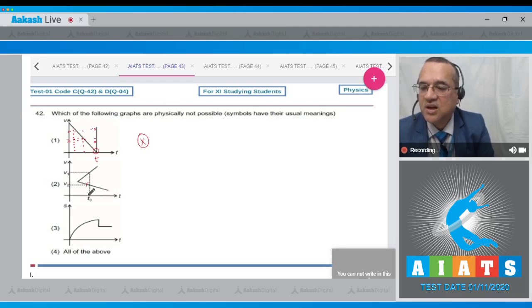Likewise, in the second graph, look at T naught. Here and here, particle has two values of velocity, v1 and v2, which is also not true. This graph is not possible. And what do you find in the third graph? No problem till this point. But move from here to here. Corresponding to this time, the particle has, at the same time, different positions. That's also not possible.